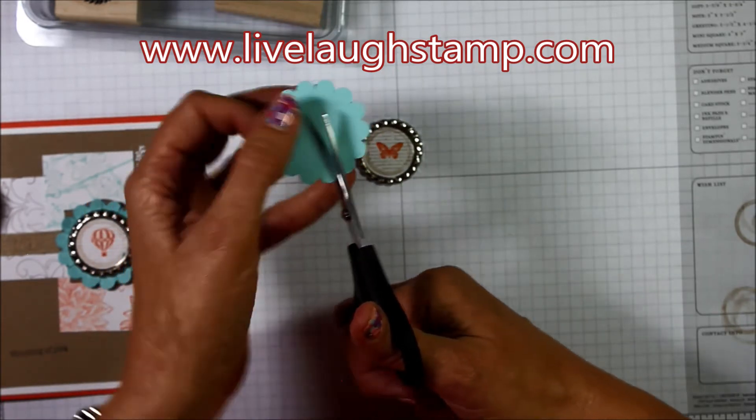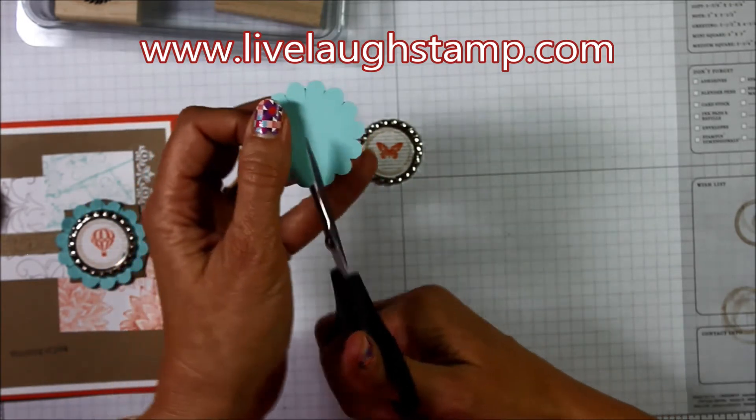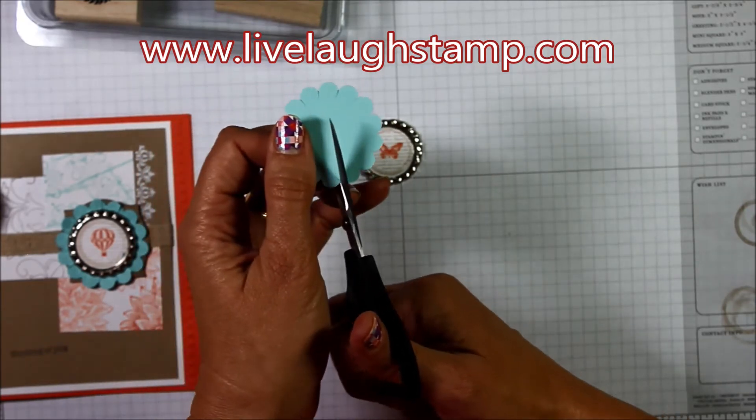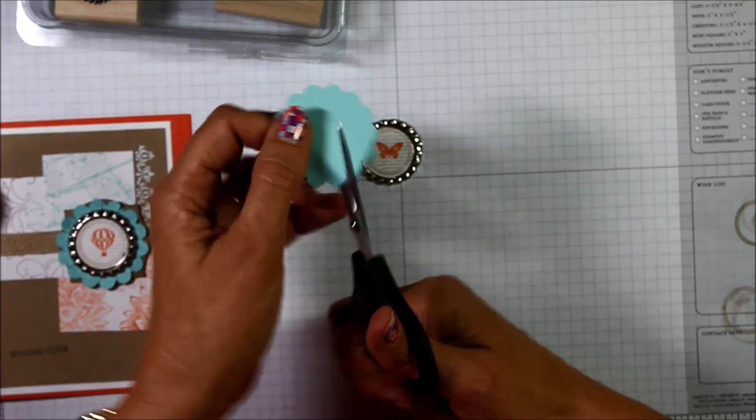And you don't have to worry about going too far in or not far enough. We just want to get these sliced apart so it kind of gives it the look of a daisy when you get it stuck down onto your card.